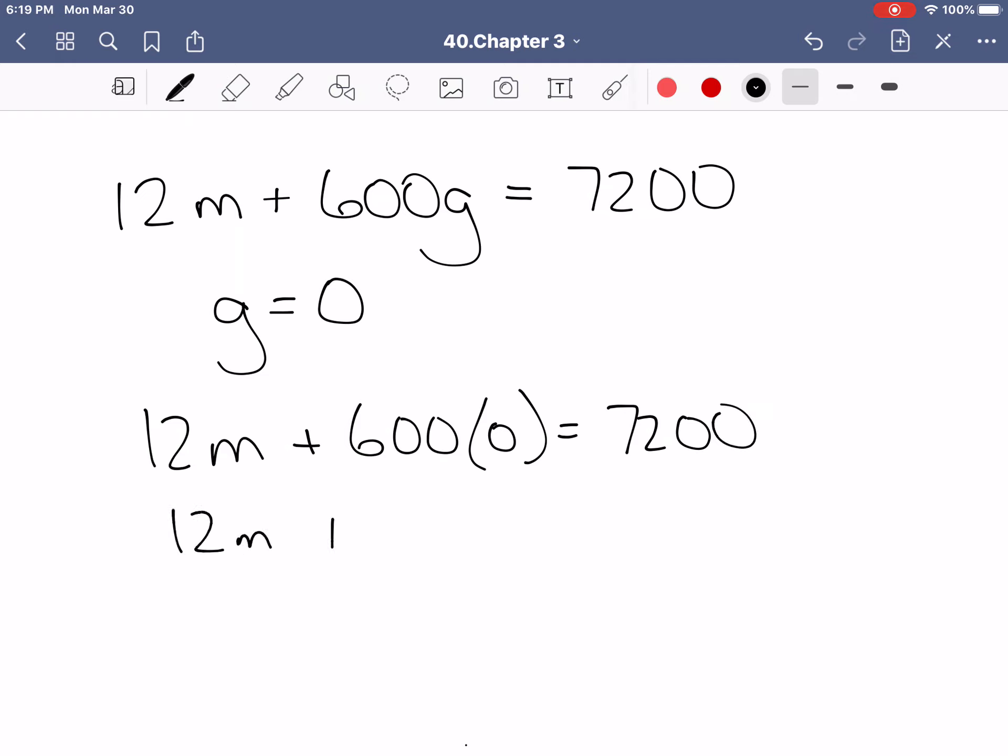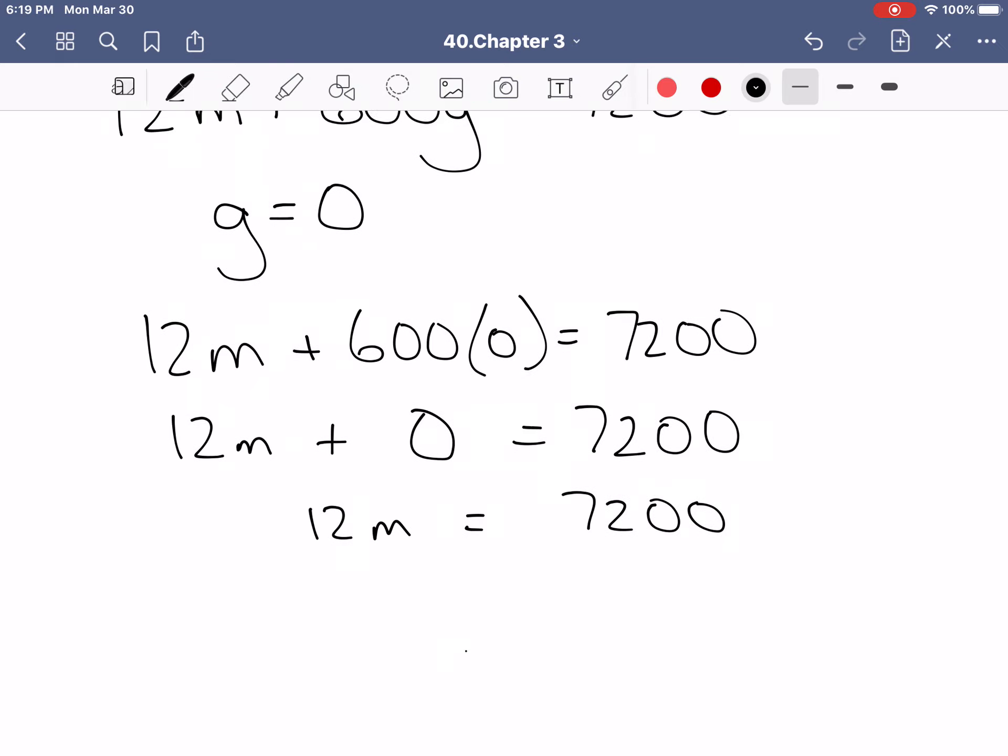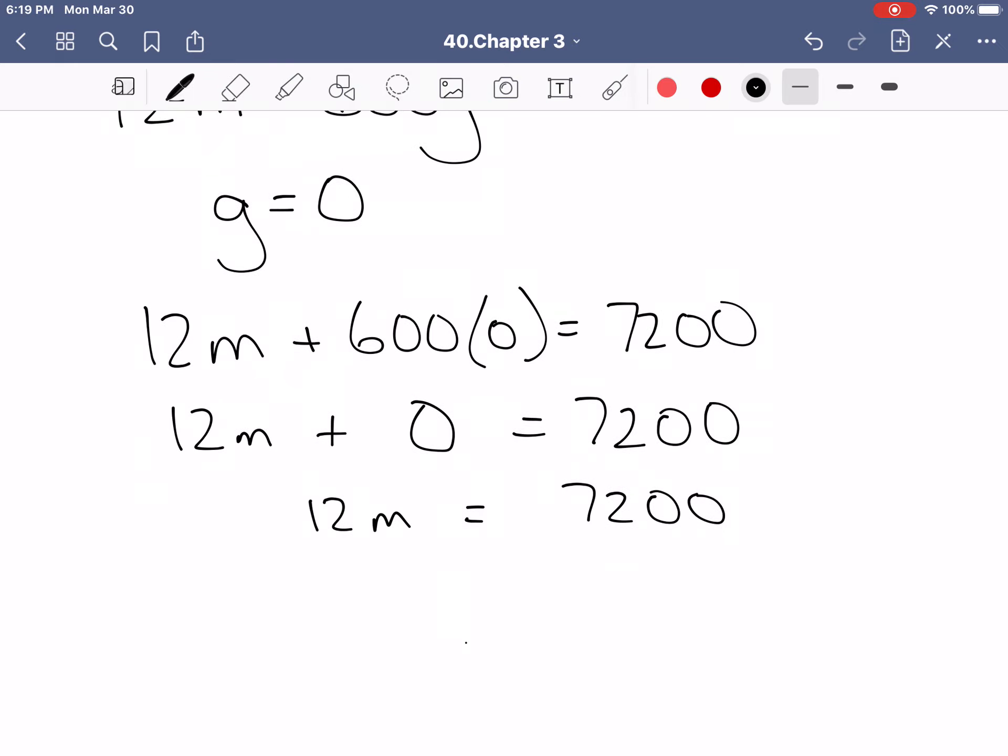That means that 12m plus zero equals 7200, or 12m equals 7200. And then what I'm going to do is, because I've got 12 times m, I'll divide by 12 to isolate the m.